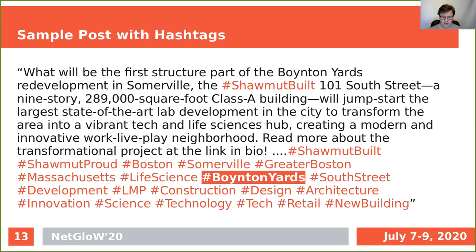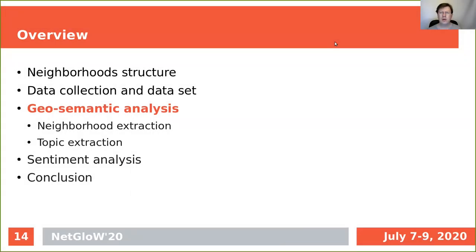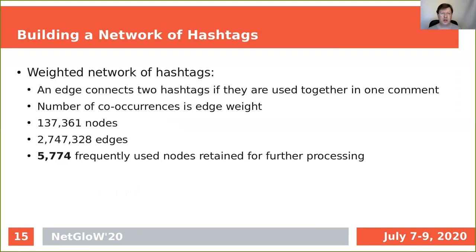We are going to use these hashtags to build a geosemantic network of Boston area neighborhoods. Let's start with building a network of hashtags — it is going to be a weighted network, so hashtags will be connected with edges of different thickness. An edge connects two hashtags if they are used together in one comment, and the number of co-occurrences is the weight of that edge. After extracting all hashtags from all comments in our data set, we obtained 137,000 nodes — in other words, 137,000 different hashtags — connected with roughly three million edges.